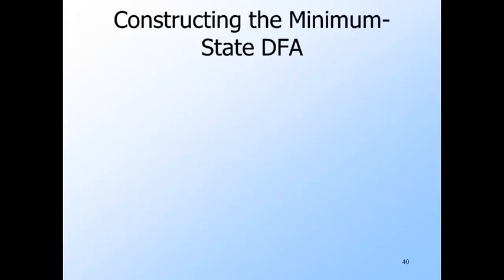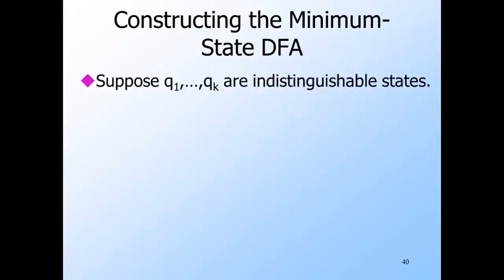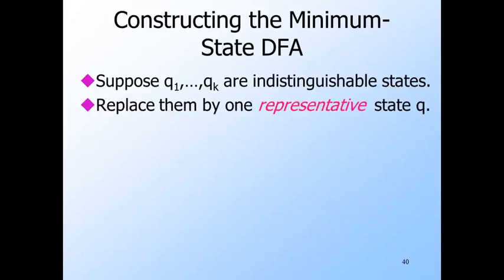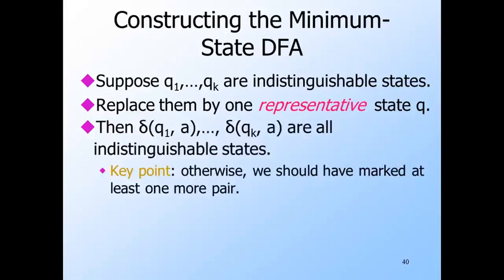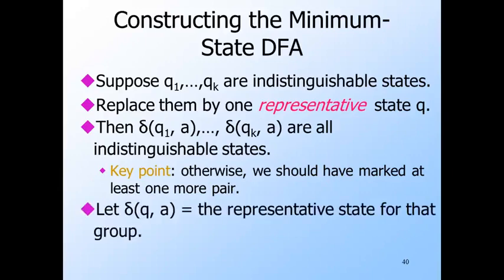We use the table of indistinguishability to merge indistinguishable states, giving the minimum-state DFA, although we must also remove unreachable states. Given a set of indistinguishable states Q1 through Qk, we replace them all by a single representative state Q. On any symbol a, all indistinguishable states go to states that are also indistinguishable from one another — if not, we could use that distinction to distinguish Q1 from Q2, which we already know are indistinguishable. So the transition for Q on input a is the representative for the indistinguishable class containing delta(Q1, a).